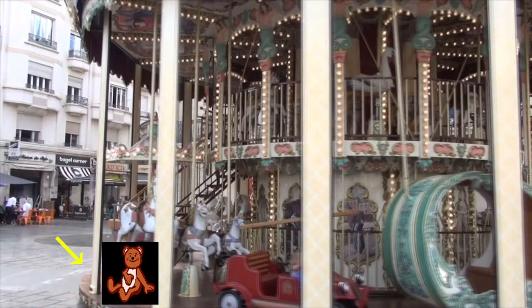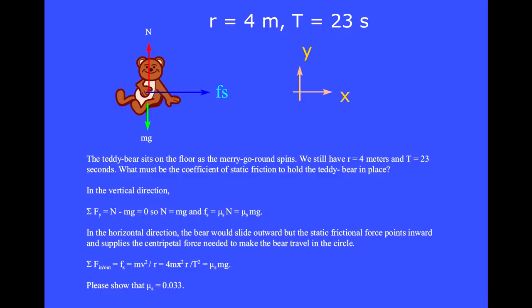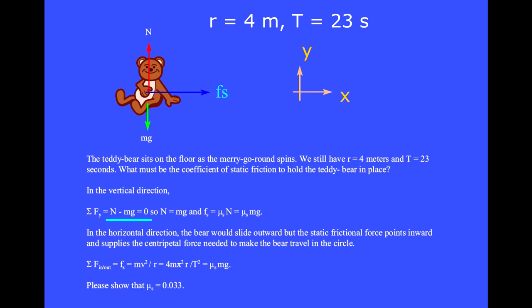Her teddy bear is sitting on the floor of the merry-go-round as it spins. We still have a radius of 4 meters and a period of 23 seconds. What must be the coefficient of static friction to hold the teddy bear in place? We choose the positive x-axis to be inward toward the center of the circle. In the vertical direction, the sum of the y-components of forces equals plus N minus Mg equals 0, so the normal force N equals Mg, and thus the static frictional force equals μₛ times Mg.